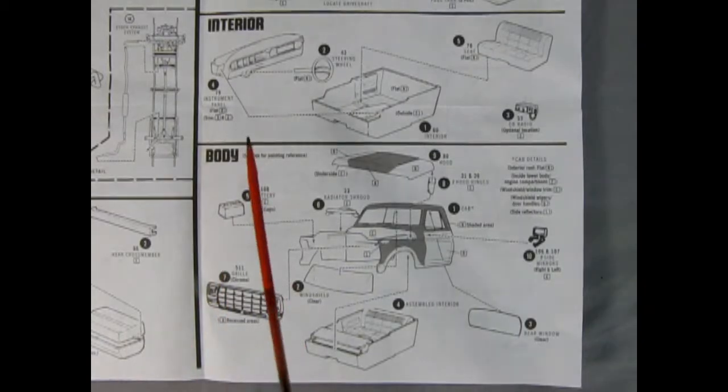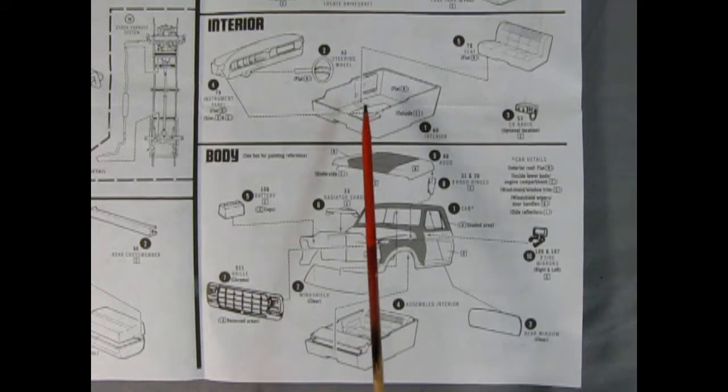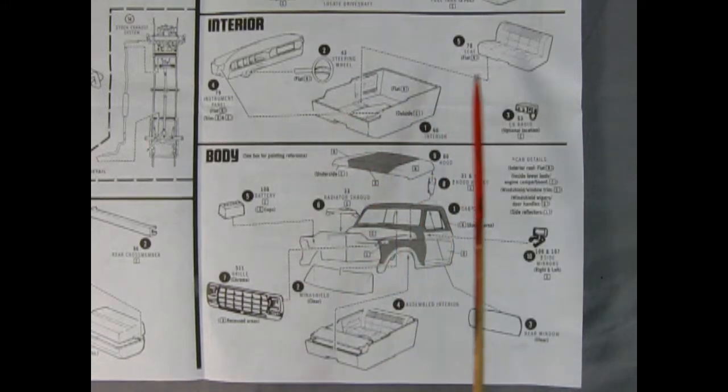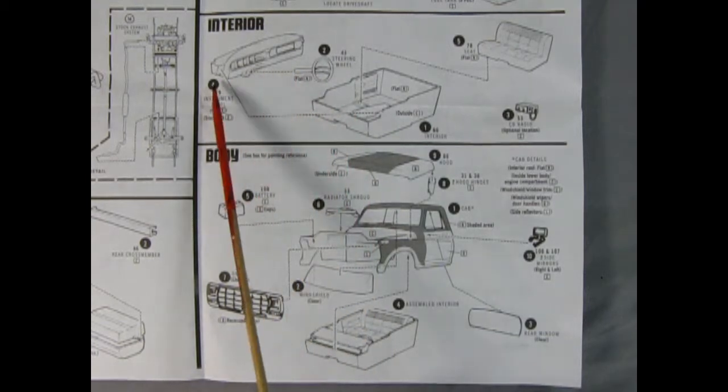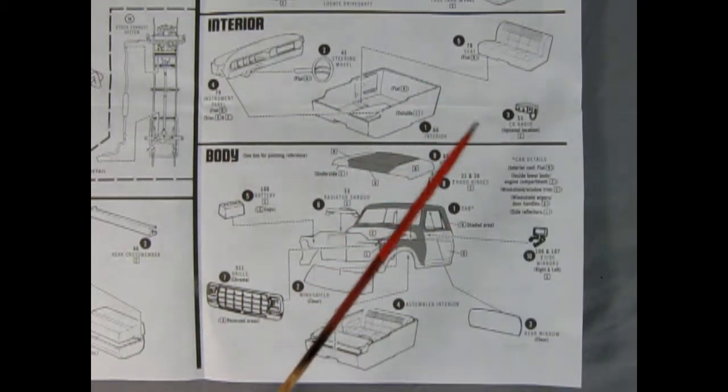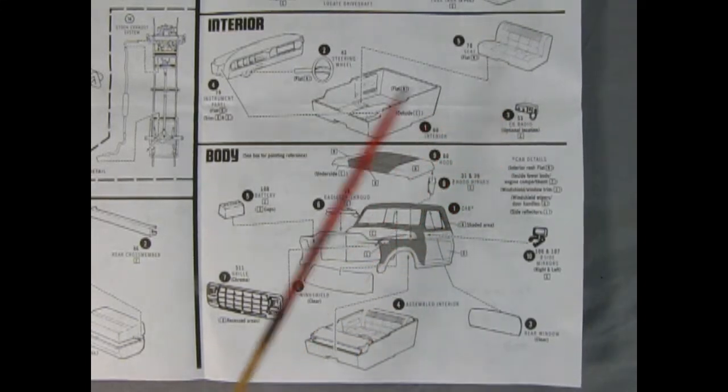These two panels show our interior which is quite simplified. You have a tub style again which was popular back in this era, a bench seat that drops in from the top, a steering wheel with a column on it and a dashboard and our ever-present CB radio which was one of the greatest things of the 70s.